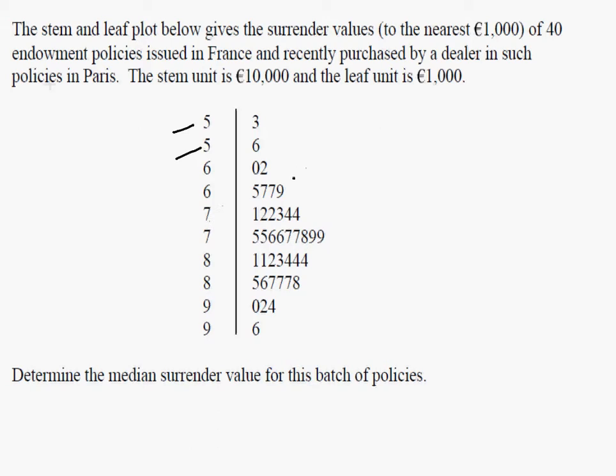Now, determine the median surrender value for this batch of policies. What we have here is, we'll just make a note of the fact that we have 40. So the median of 40 values is n equals 40.